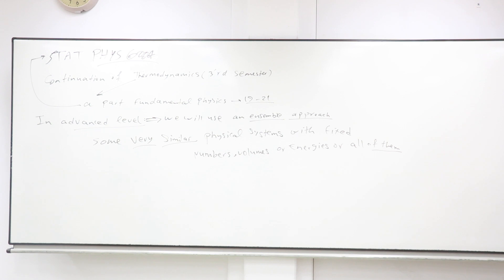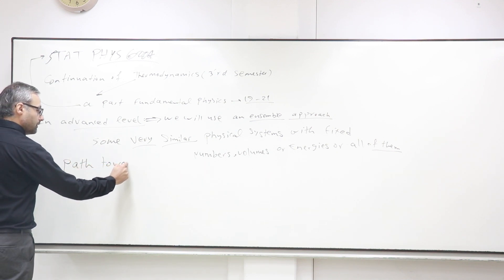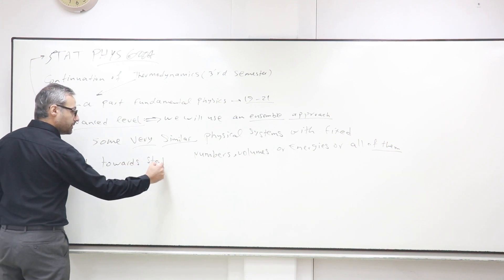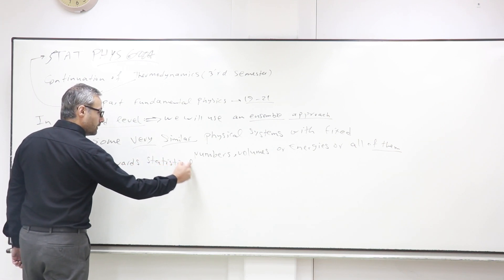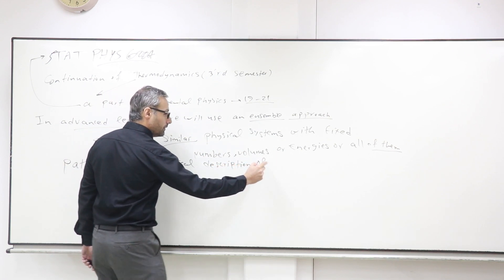This lecture will be about the terminology of statistical physics, which is less technical than the next lectures. The next lecture will be a bit more detailed in mathematics. This lecture is only about the concept, explaining the concept and explaining the path towards statistical description of different systems.